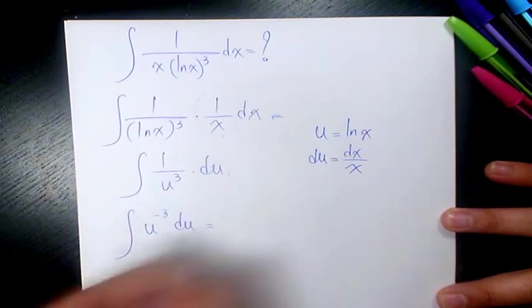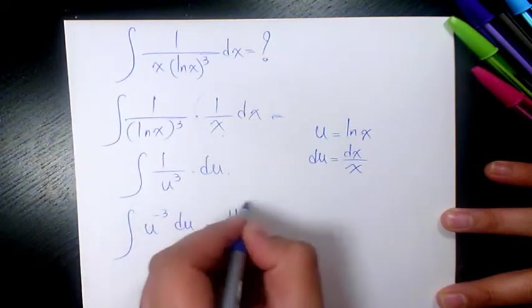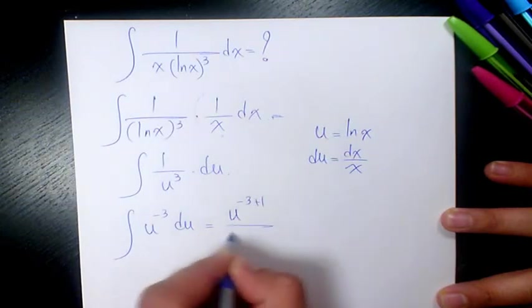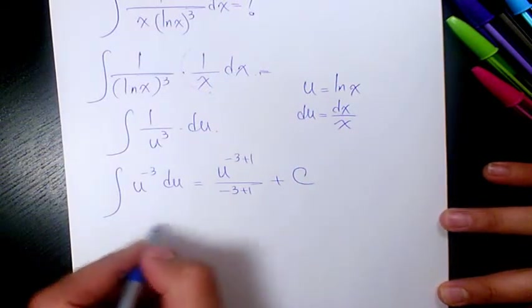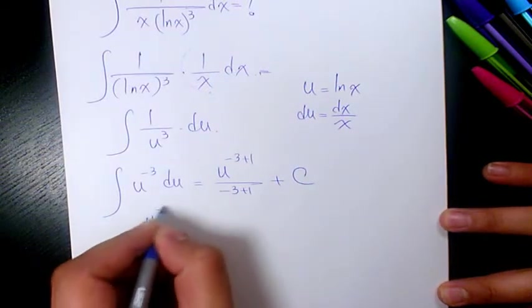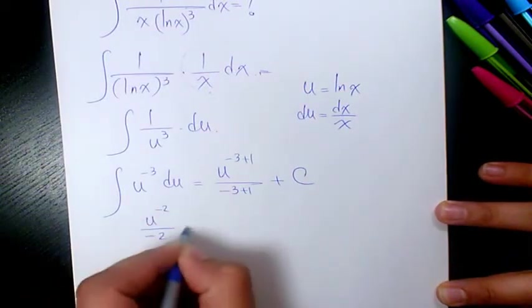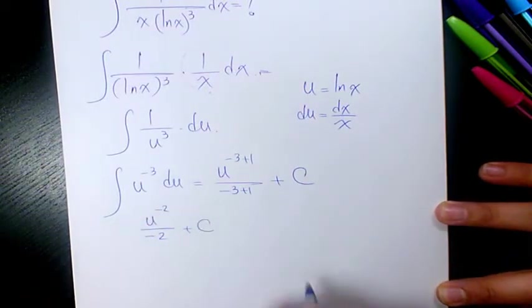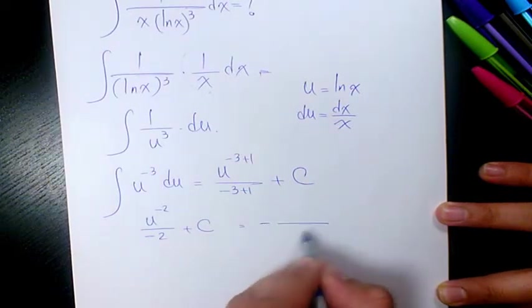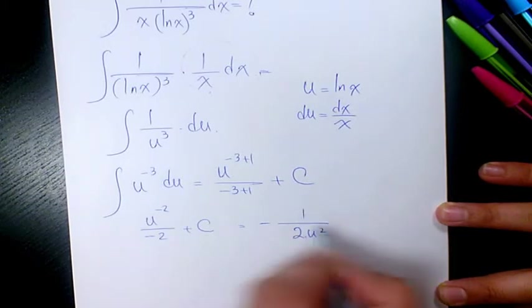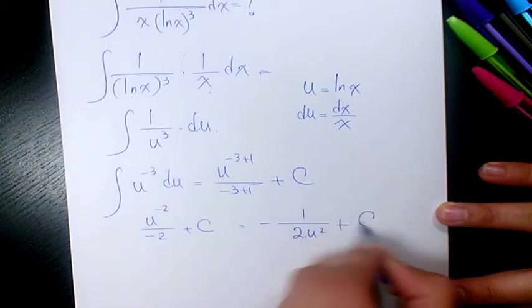When you integrate, it's going to be u to the power of negative 3 plus 1, divided by negative 3 plus 1, plus a constant. So we get u to the power of negative 2 divided by negative 2 plus a constant, which simplifies to negative 1 over 2u squared plus a constant.